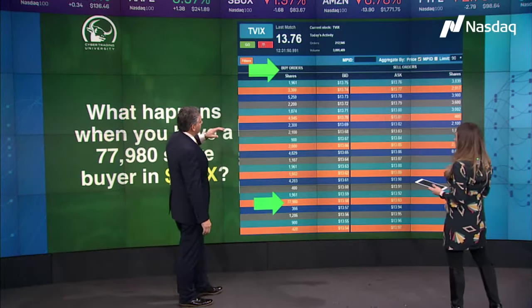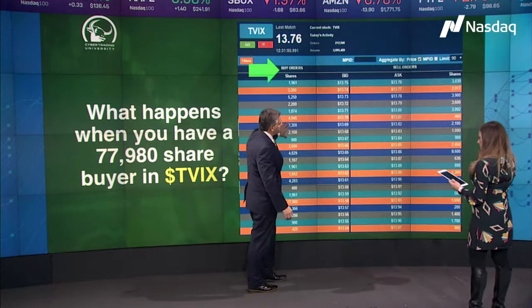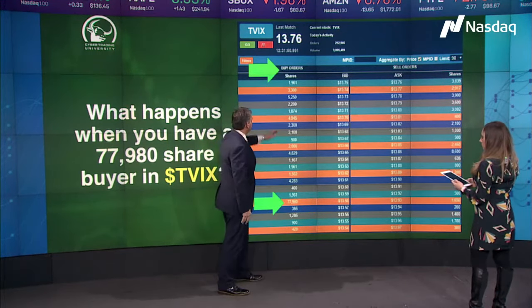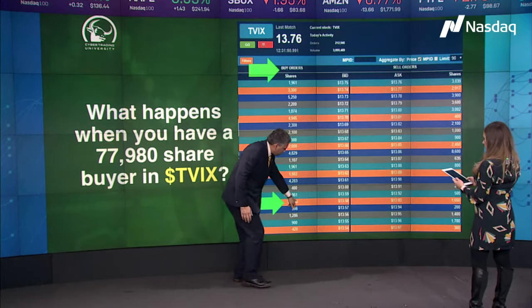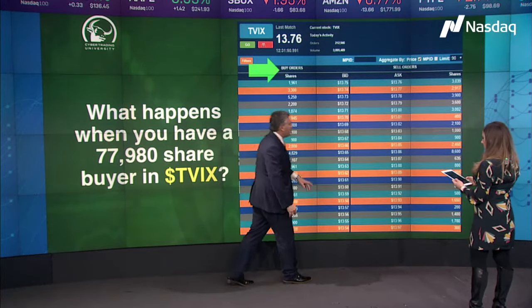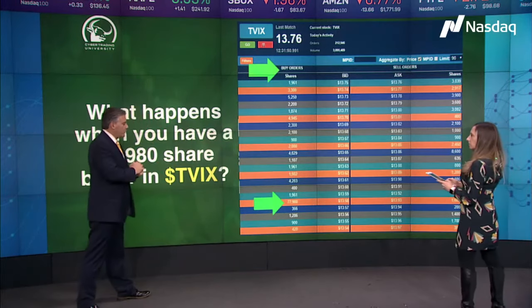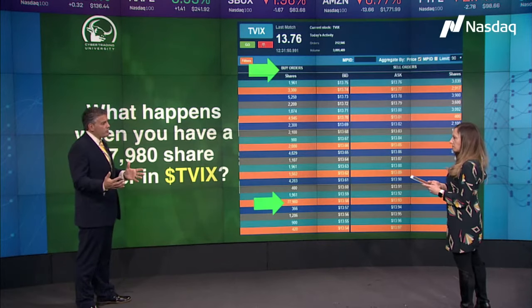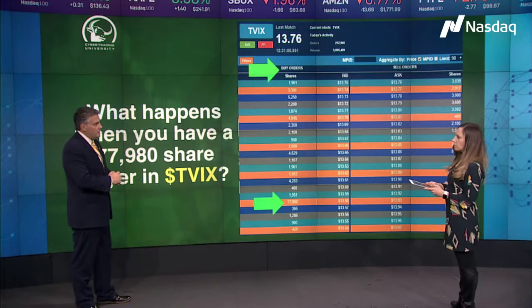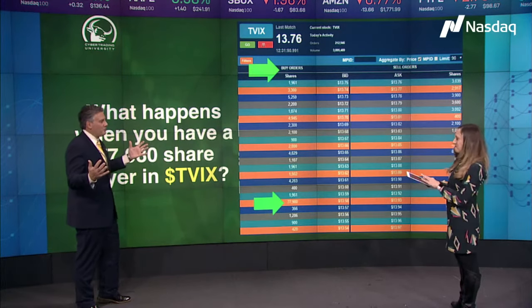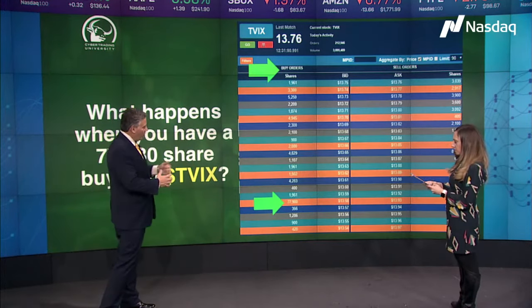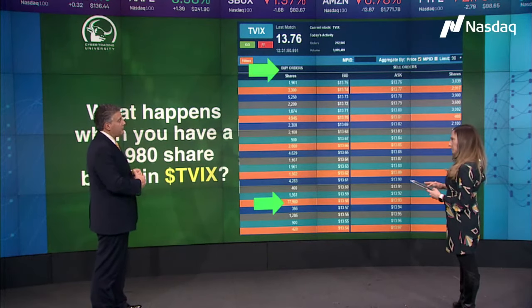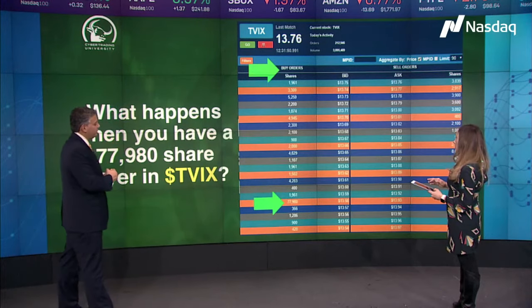Here we are looking at the TVIX, and the stock is going down. Back at the Total View, I'm saying okay, stock's going down, I want to have a game plan. As I work my way down — boom — 77,000 shares sitting here at $13.58. So think about it: what do you think is going to happen at $13.57 with all those orders? Remember, some traders are trading 1,000 or a couple hundred shares, but that is what we call an iceberg order — a term I came up with about 20 years ago after watching the movie Titanic. Big demand. So that's where it just stopped.